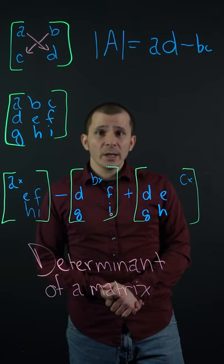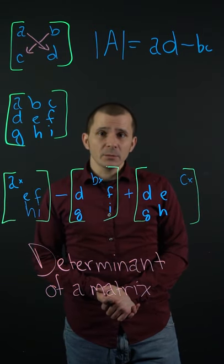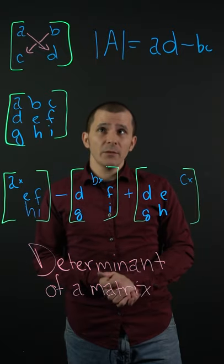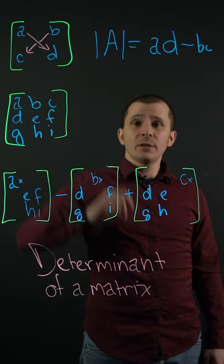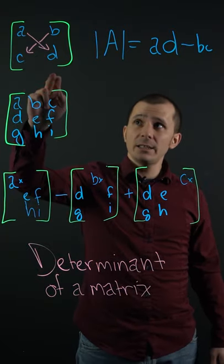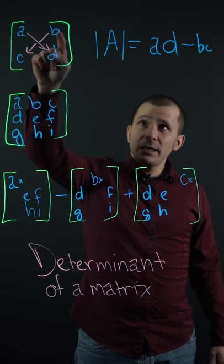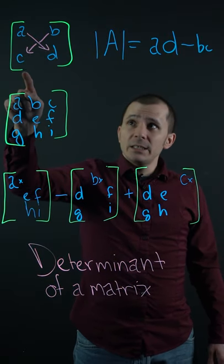Hi there! Today we're going to quickly cover the determinant of a matrix, which is basically the inverse of a matrix. In a 2x2, it's pretty simple. You take A and D, so A times D minus B times C.